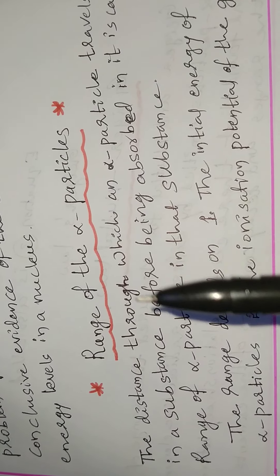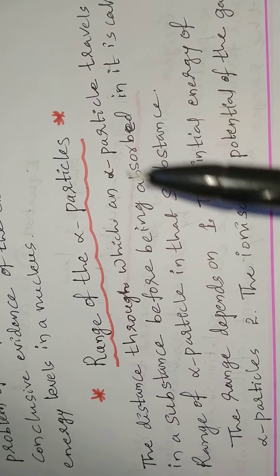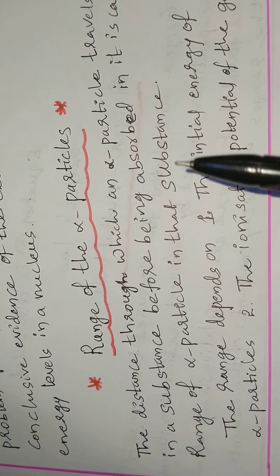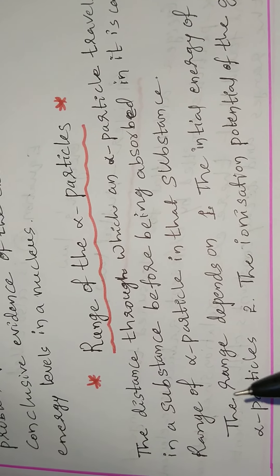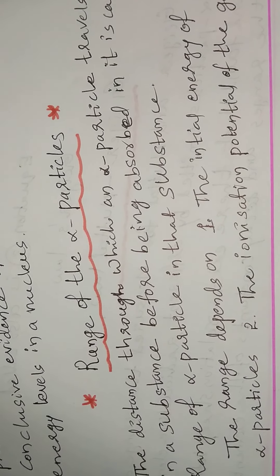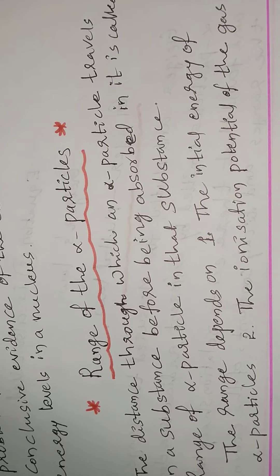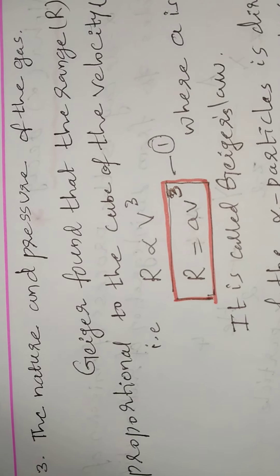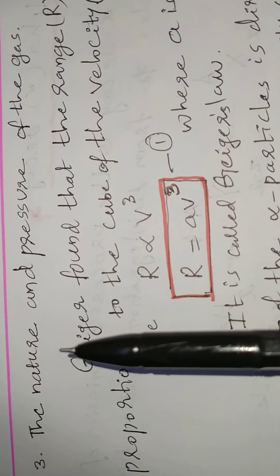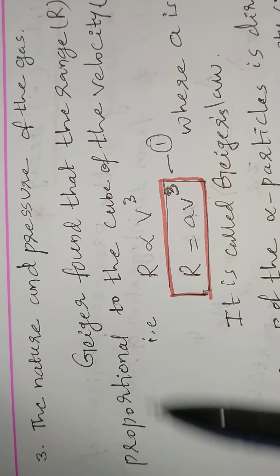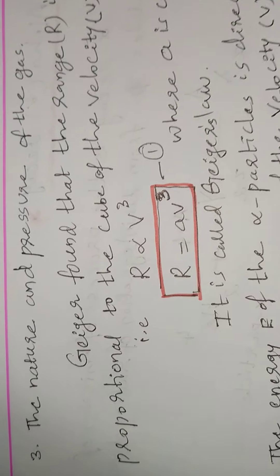Now we discuss the range of alpha particles. The distance through which an alpha particle travels in a substance before being absorbed is called the range of the alpha particle in that substance. The range depends on three factors: first, the initial energy of the alpha particles; second, the ionization potential of the gas; and third, the nature and pressure of the gas.